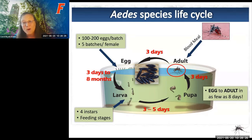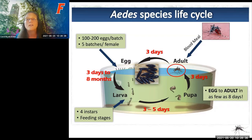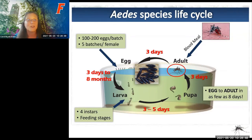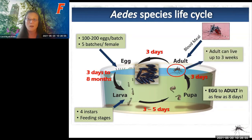That eight-day cycle is really important. You want to check for and eliminate standing water at least once a week—within eight days—because if you dump it out, you won't have these mosquitoes in your yard and neighborhood. Remember, they are a neighborhood mosquito. Adults can live up to three weeks, and in that time one mosquito can give rise to over a thousand new mosquitoes.